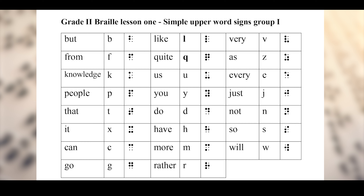The word 'knowledge' is represented by letter K. The word 'people' is represented by letter P. 'That' is represented by letter T. 'Can' is represented by letter C. 'Go' is represented by letter G. 'Like' is letter R. 'Quite' is letter Q. 'Us' is letter U. 'You' is letter Y. 'Have' is letter H. 'More' is letter M. 'Rather' is letter R. 'Very' is letter V. 'Every' is letter E. 'Just' is letter J. 'Not' is letter N. 'So' is letter S. 'We' is letter W.